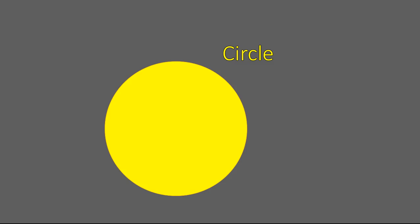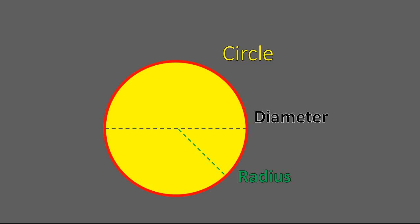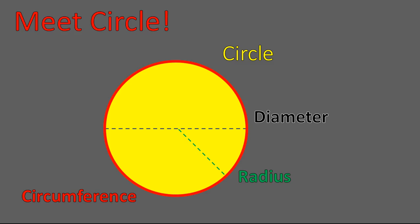First of all, I want you to meet my friend Circle. Our circle has certain parts that we'll talk about. A diameter is the distance across the entire circle — it goes through the center and touches two sides of the circle. A radius starts at the center, comes out and touches the circle at one point. And this red line around the outside is known as the circumference.